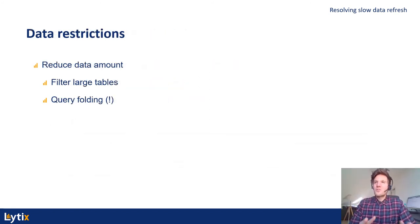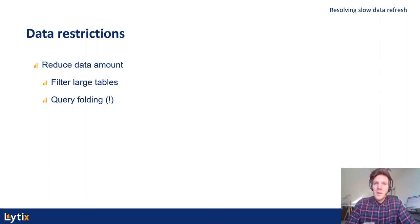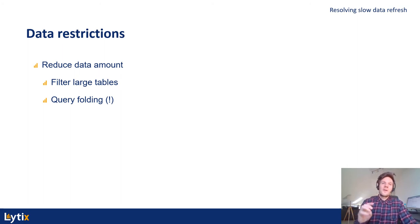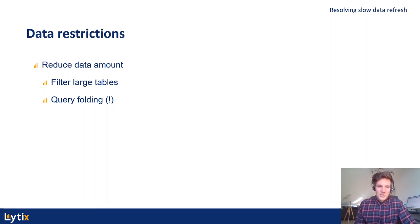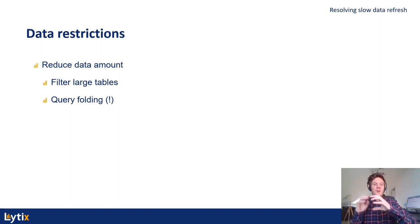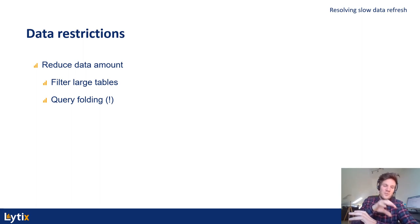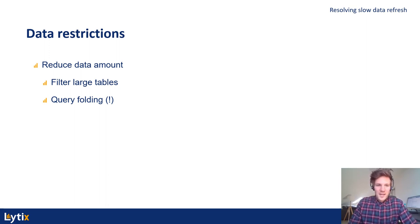Data restrictions: always try to reduce your data amounts. You can filter your large tables, and make sure that query folding will be applied. You can navigate to your Power BI file in the Power Query steps and see the native query of your underlying data source. For example, if you're connecting to a SQL Server or an SAP HANA source, you can see the native SQL query that the VertiPaq engine is sending to your data sources. Query folding is very important because then any filter you're applying in Power BI will also be pushed through via the query sent to the underlying data source — very important if you'd like to save time refreshing your reports.